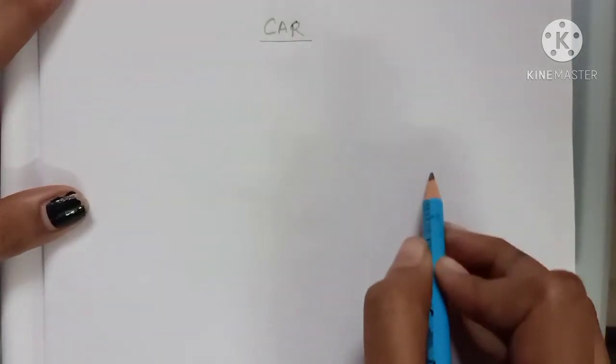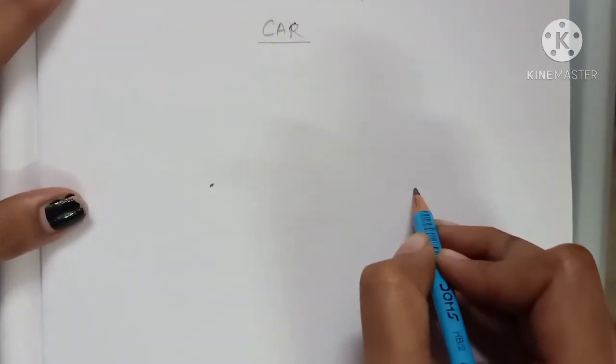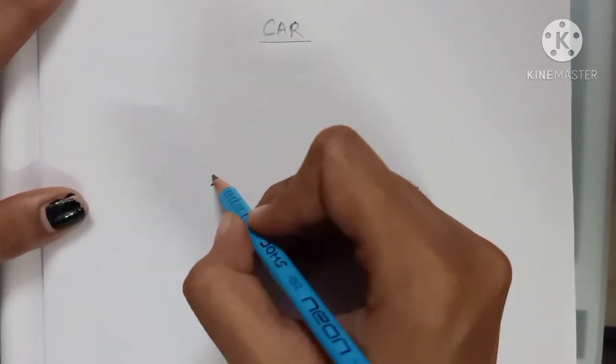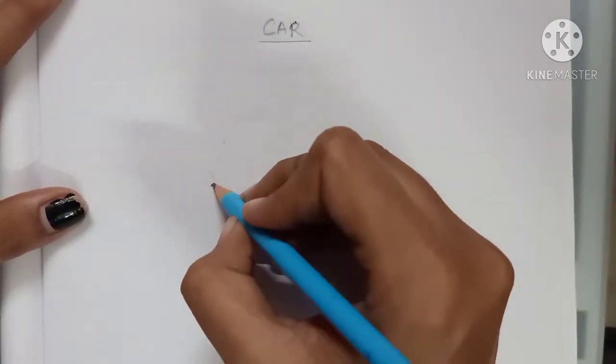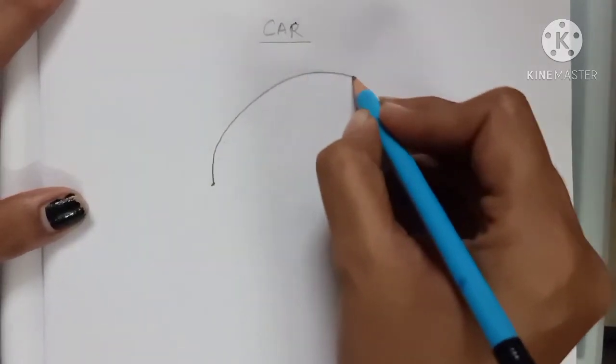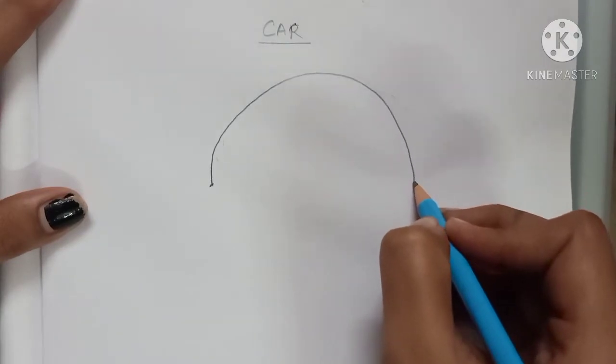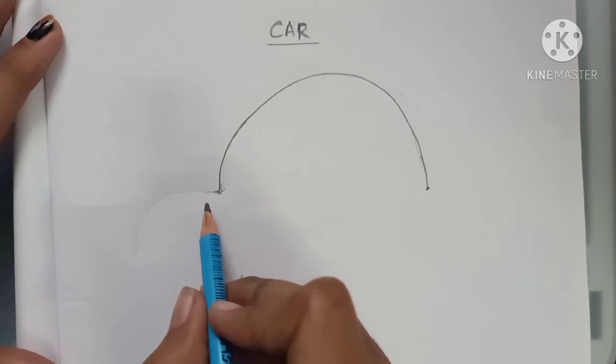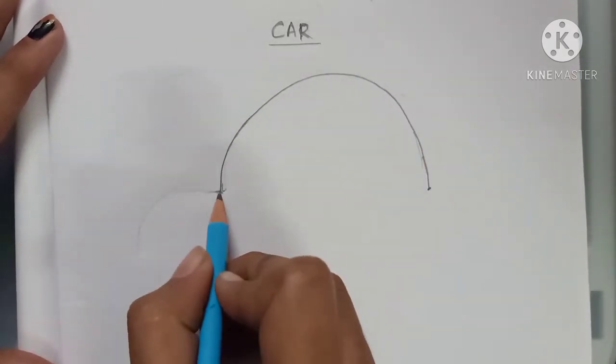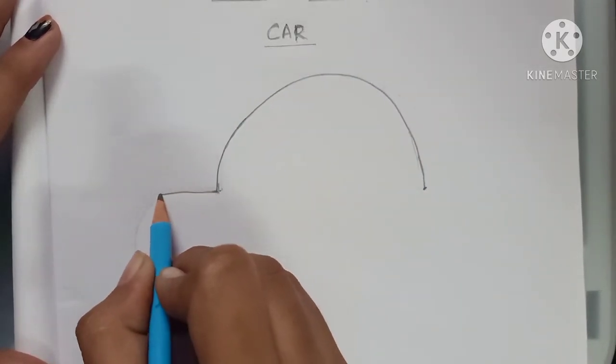First of all, you have to make a half circle. Parents can also give dots or they can make dotted lines like this. So make a half circle. Students, after making this semicircle, make a sleeping line and a curl.